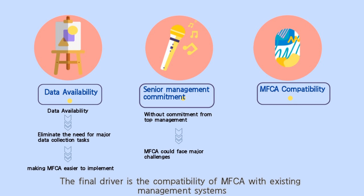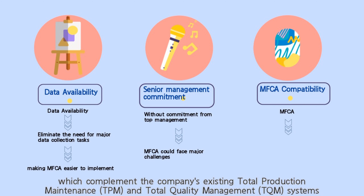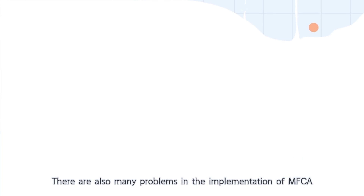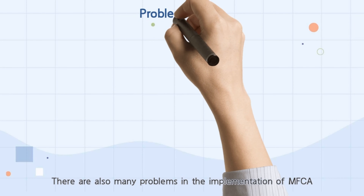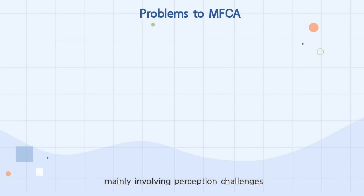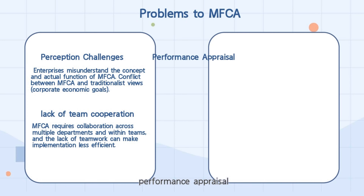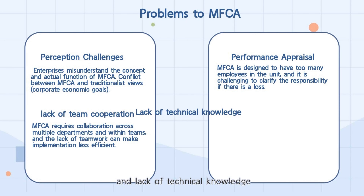The final driver is the compatibility of MFCA with existing management systems, which complement the company's existing Total Production Maintenance (TPM) and Total Quality Management (TQM) systems. This makes it easier for companies to implement MFCA. There are also many problems in the implementation of MFCA, mainly involving perception challenges, lack of team cooperation, performance appraisal, and lack of technical knowledge.